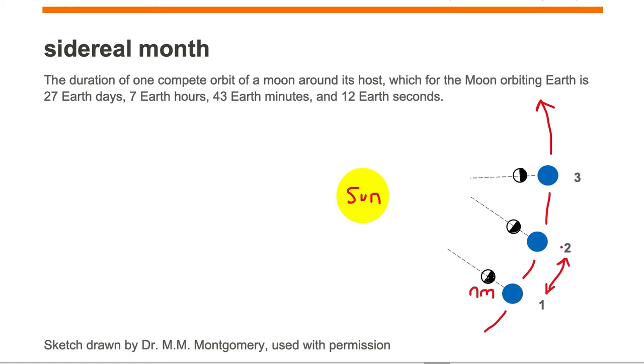Notice that position two is not a new moon phase. If you take a look at the line, which is parallel to the line in position one, the line that passes from the Earth through the moon is pointing to the right of the sun. So it's not quite a new moon phase.